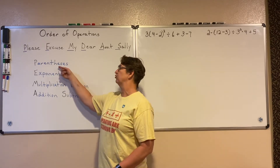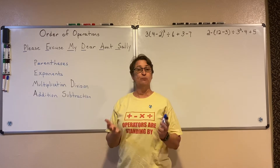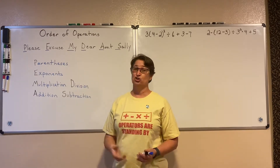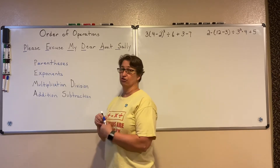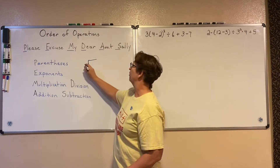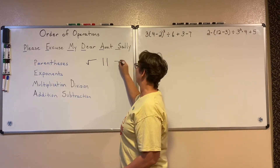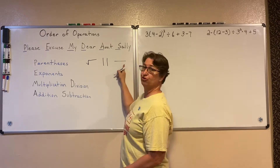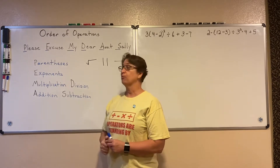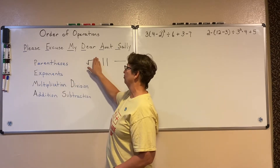The order is: first we do parentheses — anything inside the parentheses we perform first. Sometimes those parentheses may look like something other than parentheses. They may look like a radical, or an absolute value sign, or a fraction where you've got something underneath or on top of the vinculum. So our parentheses are sometimes not exactly parentheses, but grouping symbols.